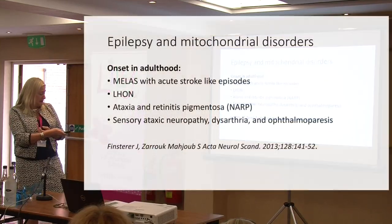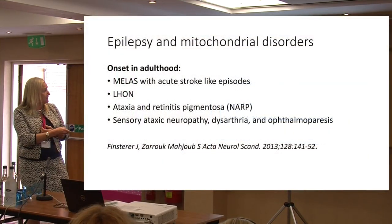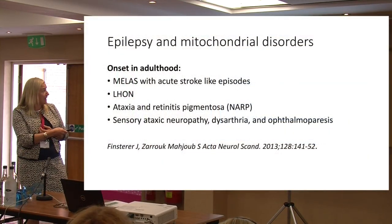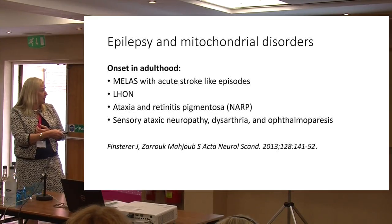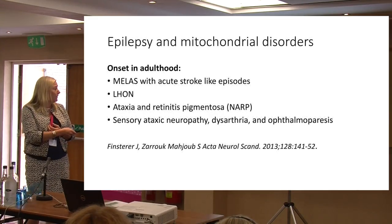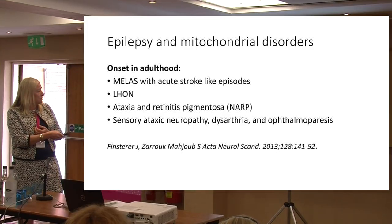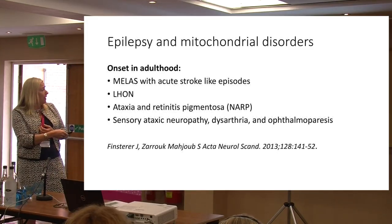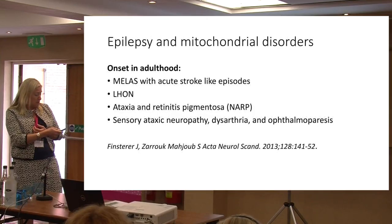In adulthood, the conditions more commonly associated with onset of epilepsy include MELAS, Leber's hereditary optic neuropathy, NARP, and related conditions — a somewhat different picture from children.